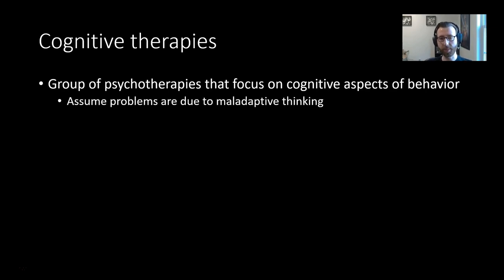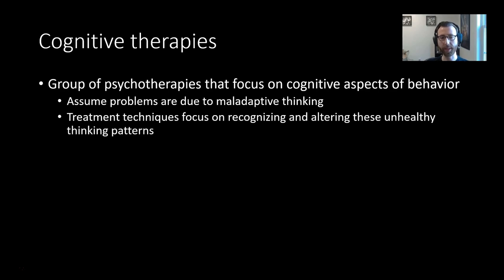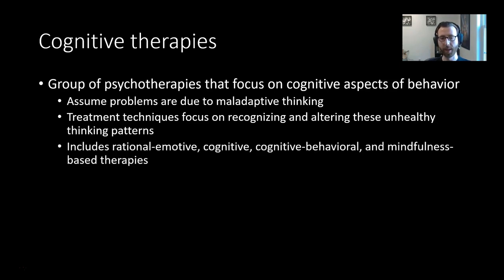These therapies assume that problems are due to maladaptive thinking, and that treatment techniques focus on recognizing and altering these unhealthy thinking patterns. The four branches of cognitive therapy we're talking about today are rational emotive, cognitive, cognitive behavioral, and mindfulness-based therapies.